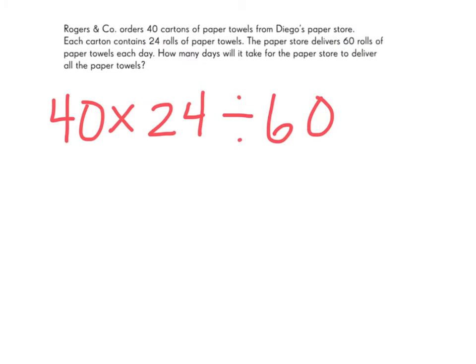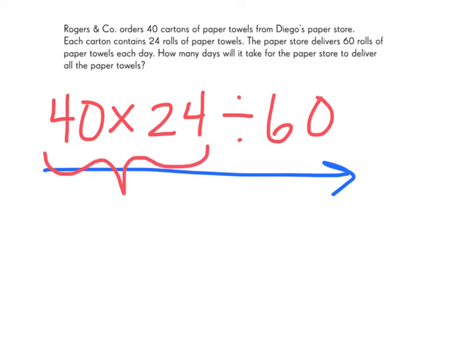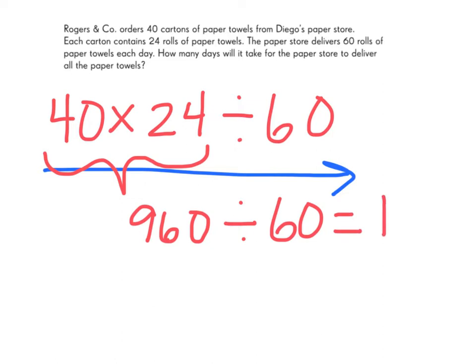Just as with our problem that included addition and subtraction, we are going to work from left to right, just as we would read a number sentence. So first, we will evaluate the first expression, which is 40 times 24. 40 times 24 gives us an answer of 960. Our second step will be to divide 960 by 60, which gives us an answer of 16. So the answer is 16 days to deliver all of the paper towels.